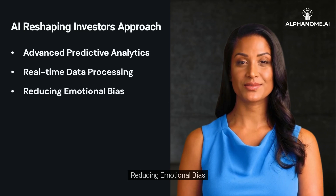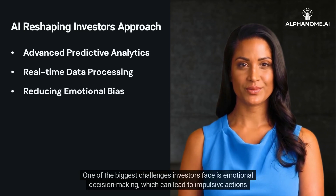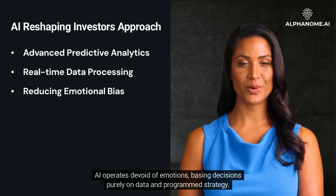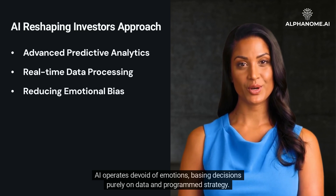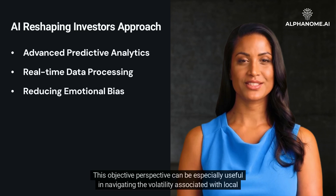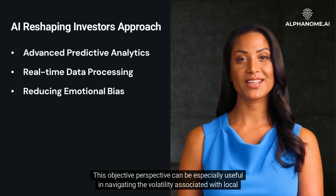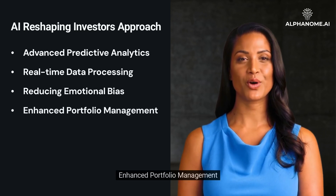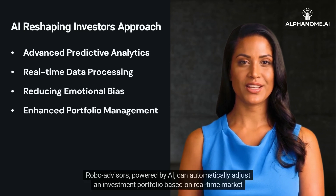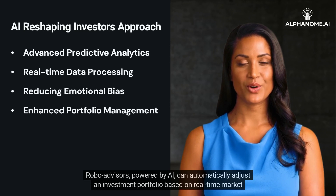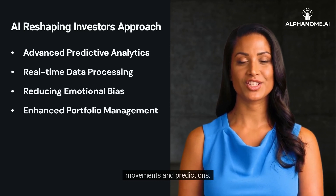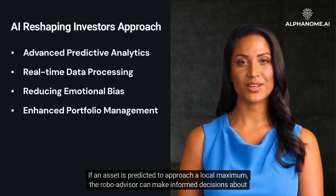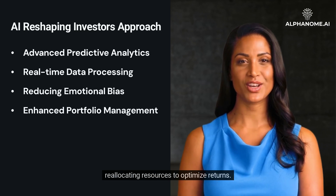Reducing emotional bias is one of the biggest challenges investors face — emotional decision-making can lead to impulsive actions during market highs and lows. AI operates devoid of emotions, basing decisions purely on data and programmed strategy. This objective perspective is especially useful in navigating volatility associated with local maximums and minimums. Robo-advisors powered by AI can also automatically adjust an investment portfolio based on real-time market movements and predictions — if an asset is predicted to approach a local maximum, the robo-advisor can make informed decisions about reallocating resources to optimize returns.